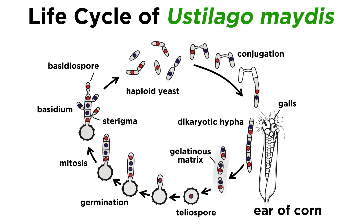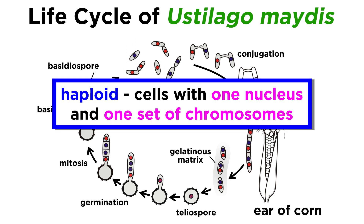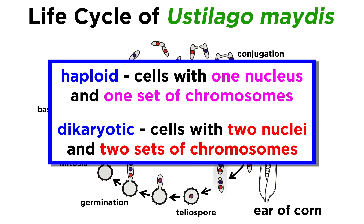Corn smut has an exciting life cycle consisting of two phases: a single-celled haploid yeast phase and a dicaryotic mycelia phase. As we recall from our study of biology, haploid means the cells each have one nucleus and one set of chromosomes. Dicaryotic means there are two nuclei in each cell, one from each of the parent fungi, a feature that is unique to the fungi kingdom.